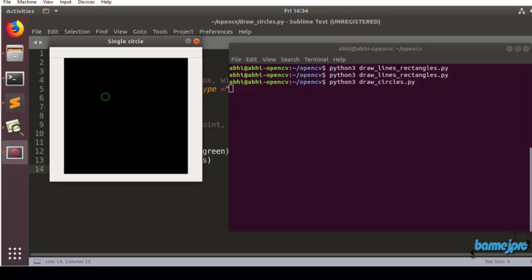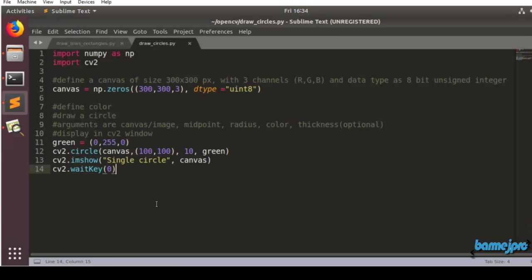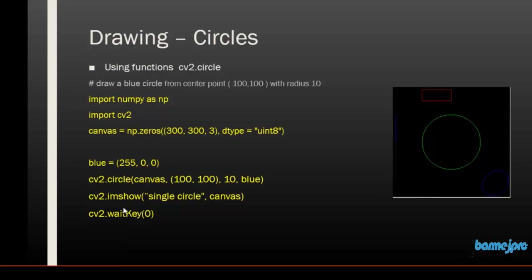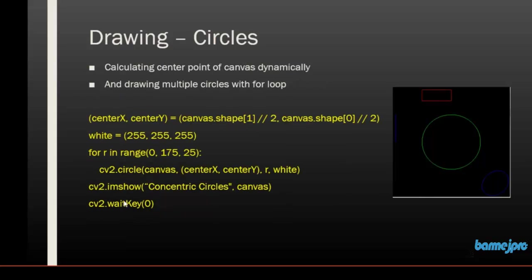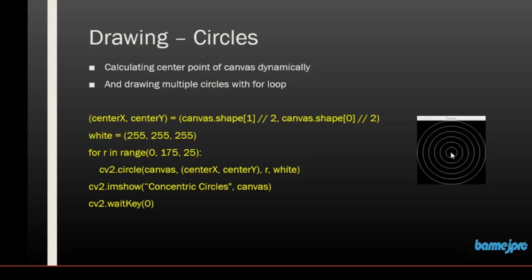Yes, we have our small green circle — we have successfully executed the first program. The next one is a bit more challenging because we are going to draw concentric circles. We will start from a single point in the middle and increase the radius by 25 pixels each time — 0, 25, 50, 75, and so on until the radius reaches 175. So the maximum radius allowed is 175, incrementing in steps of 25.